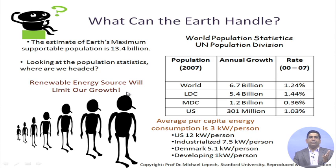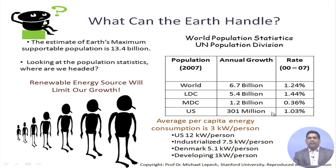Why are we worried about all these things? Our earth has a capacity it can handle. The population data, though about 10 years old, shows our population is more than 7 billion. Low-income, lower-developed countries have nearly 5.4 billion out of 6.7 billion — that is more than 70 percent of the world's population staying in low-developed countries. Medium-developed countries have around 1.2 billion and the US is around 300 million.